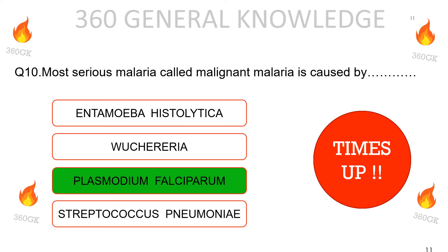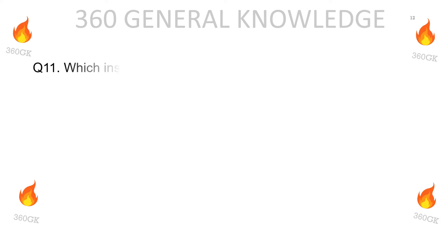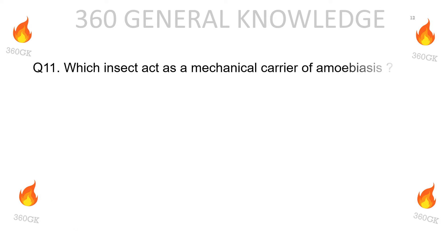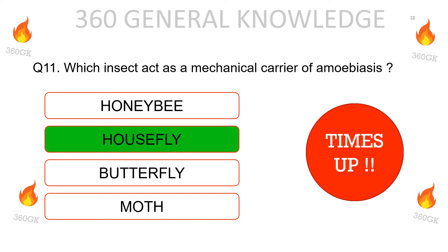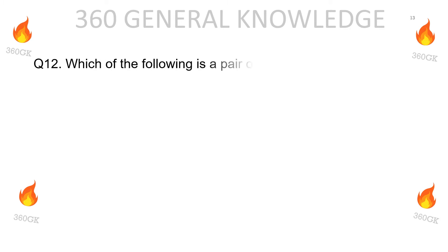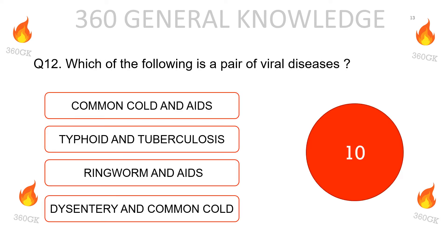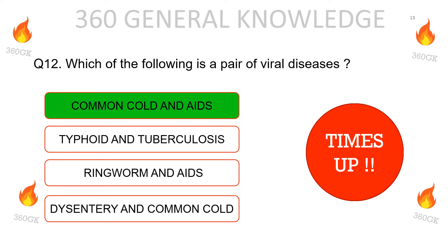Which insect acts as a mechanical carrier of amoebiasis: honeybee, housefly, butterfly, or mosquito? The correct answer is housefly. Which of the following is a pair of viral diseases: common cold and AIDS, typhoid and tuberculosis, ringworm and AIDS, or dysentery and common cold? The correct answer is common cold and AIDS.